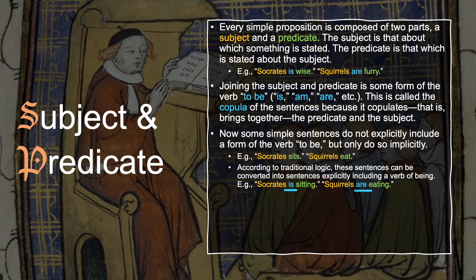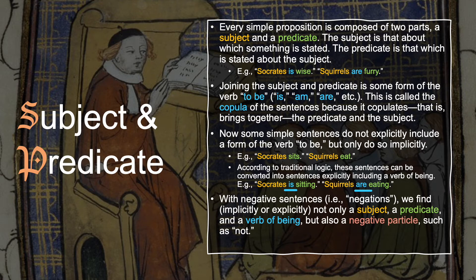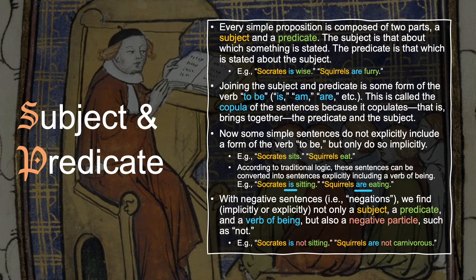Notice that there's a verb of being now in these sentences after we've converted the verb 'sits' into the copula plus participle 'is sitting,' or the verb 'eat' into the copula plus participle 'are eating.' With negative sentences—that is, negations—we find implicitly or explicitly not only a subject, a predicate, and a verb of being or copula, but also a negative particle such as 'not' or 'no.' For instance, in the sentence 'Socrates is not sitting,' we have the subject Socrates, the copula is, then the negative particle, and then the predicate sitting.